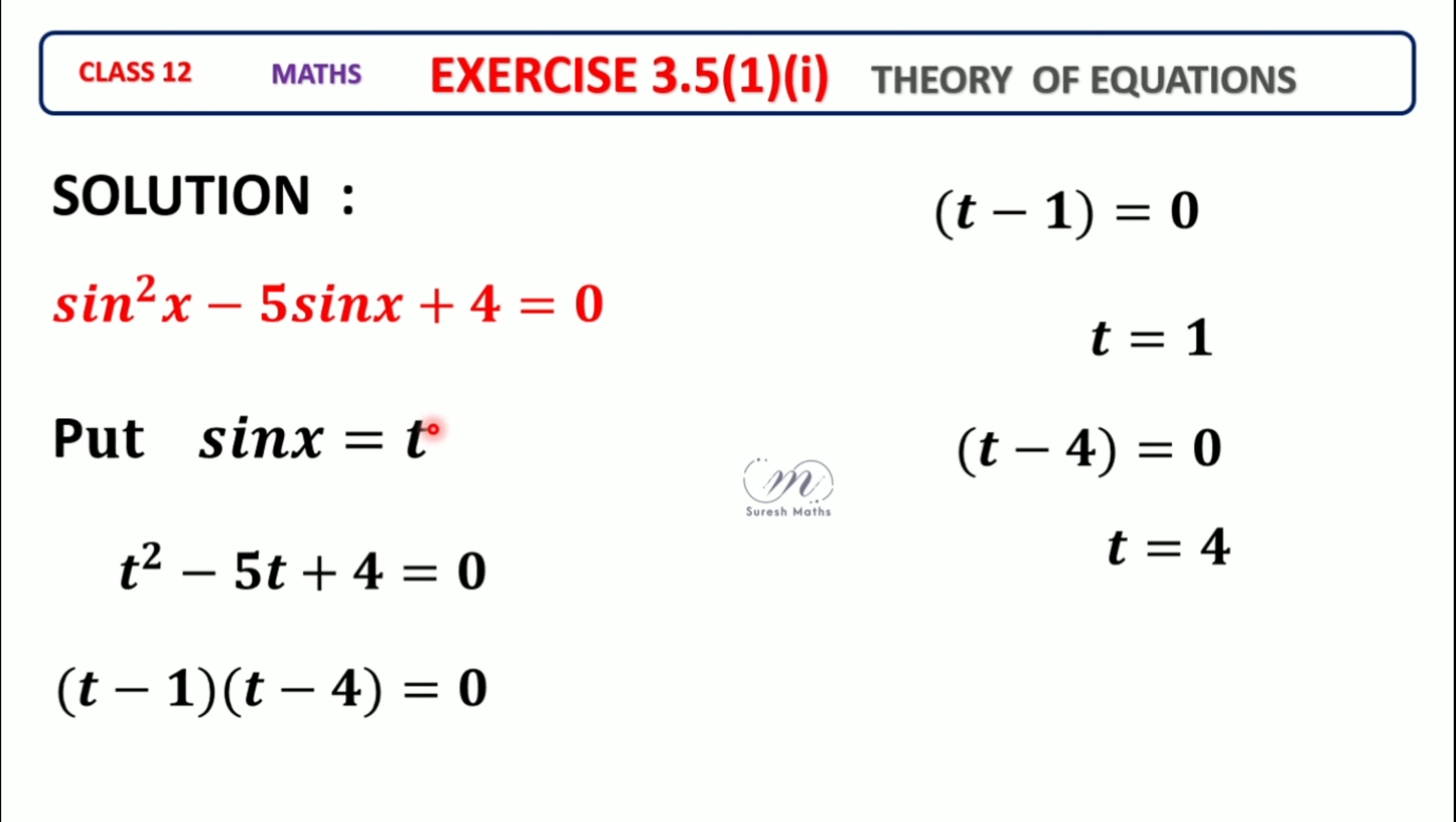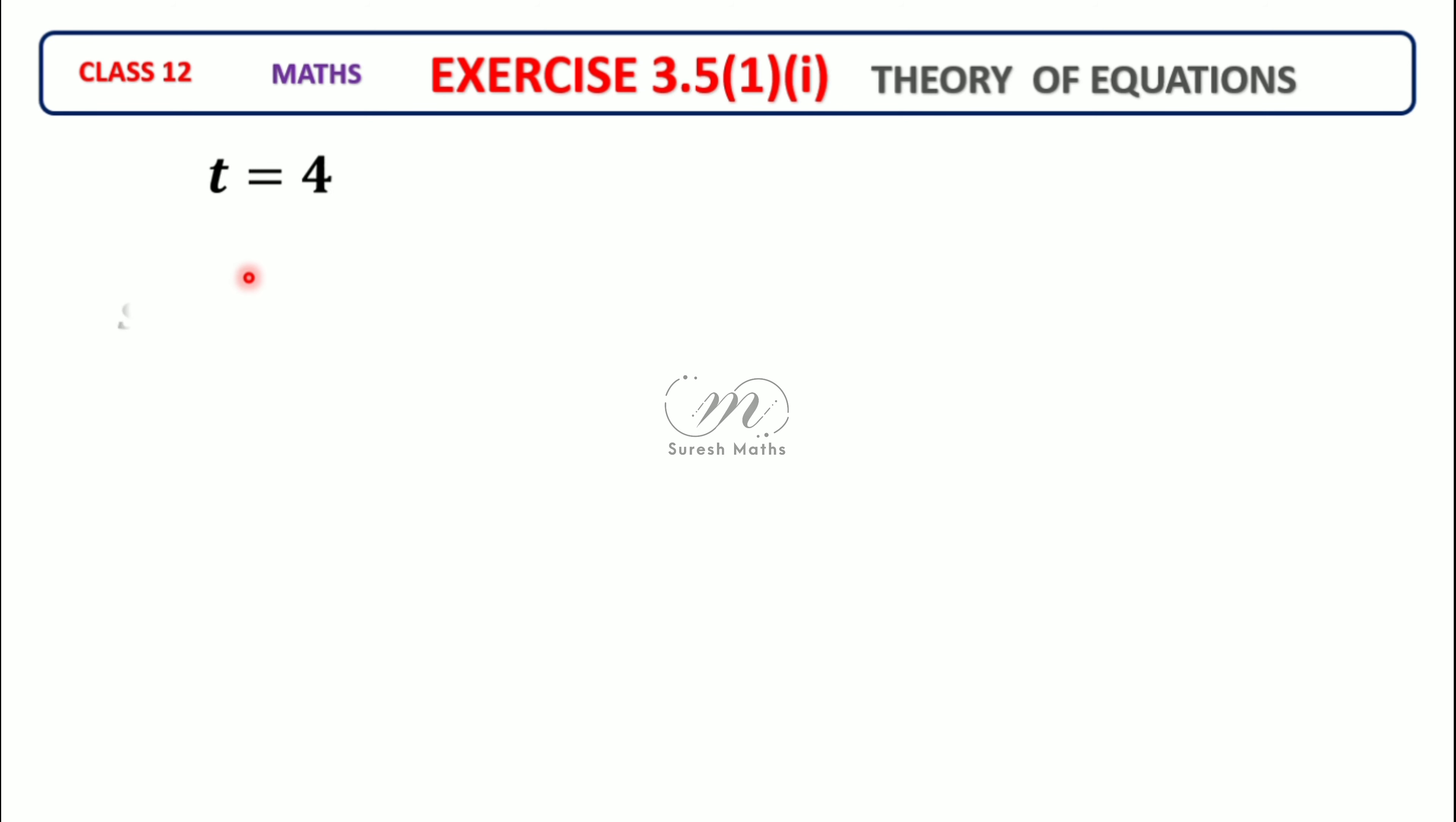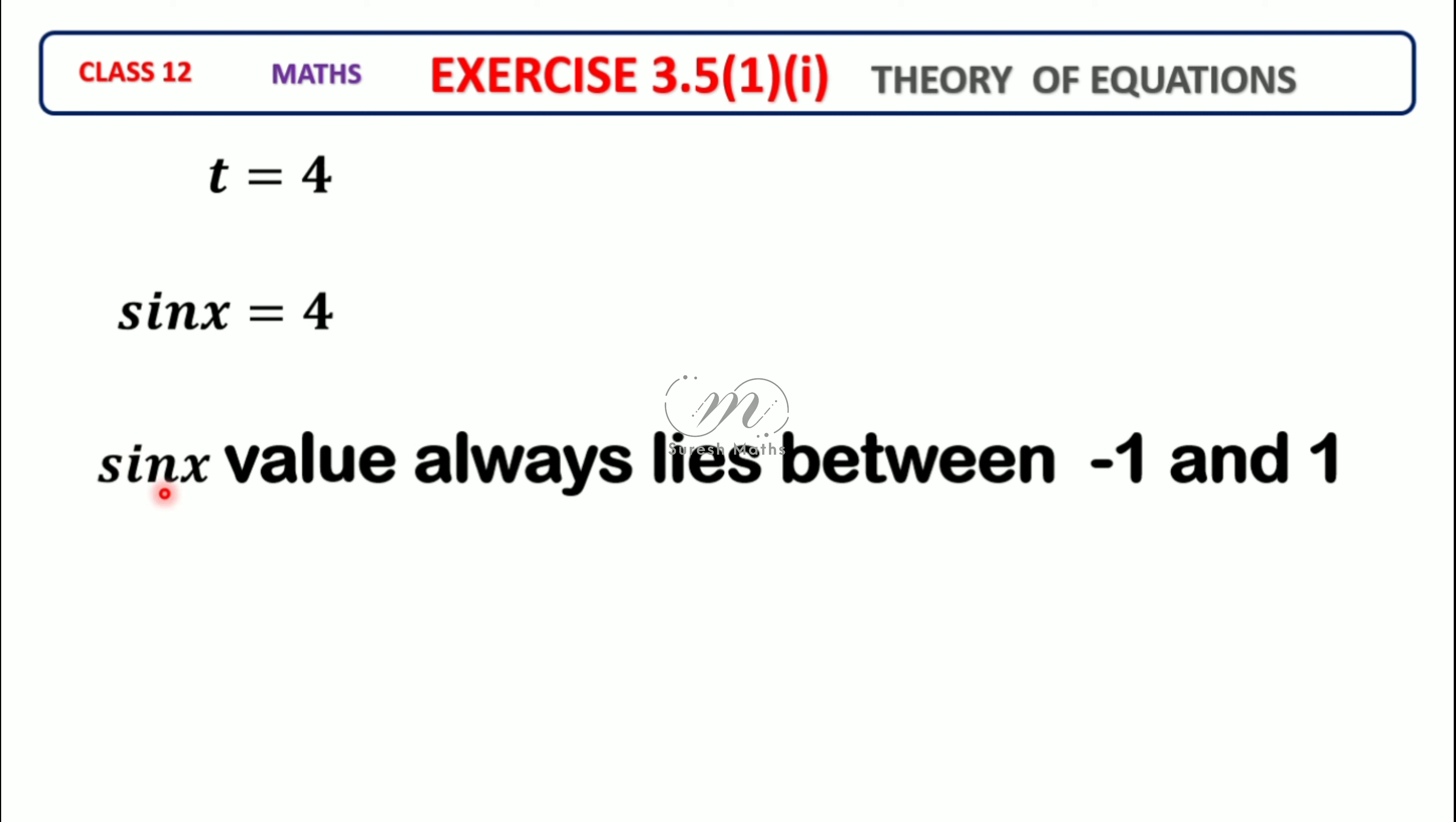t = 4 implies sinx = 4. But sinx value always lies between -1 and +1. The range of sinx is [-1, +1]. Therefore, sinx = 4 is not admissible, so t = 4 case gives no answer.